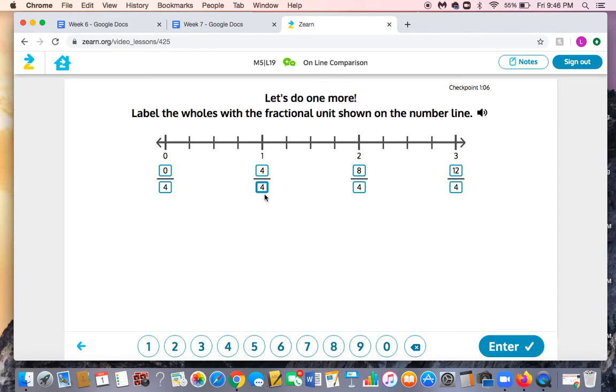So 6 fourths falls somewhere in this area. If this is 4 fourths, I can continue counting on: 4 fourths, 5 fourths, 6 fourths. So in some of the activities, you might have to put a little dot here to label certain fractions.